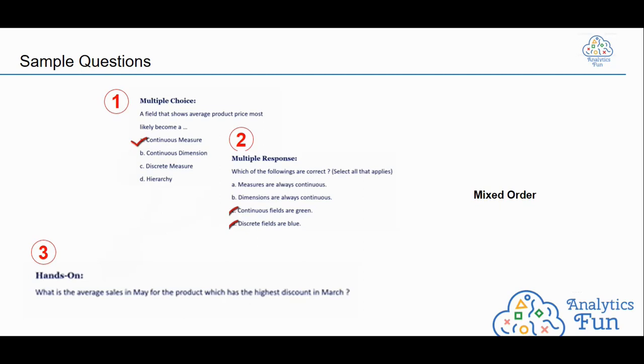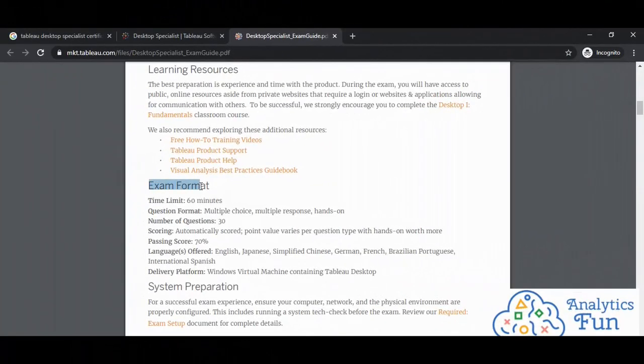For instance, you will get multiple choice, then multiple response, then hands-on and then again multiple response, then again hands-on, then multiple choice. It can be any order, any jumbled order. Second, you can flag the questions in the examination so that you can visit them later. Third, there will be different marks for different questions and hands-on questions will carry more weightage.